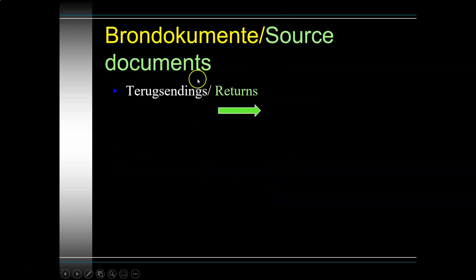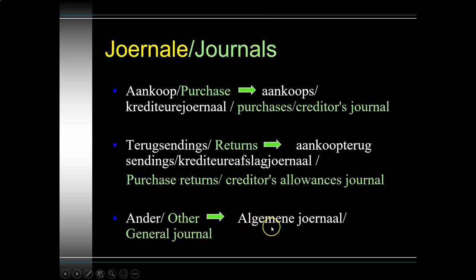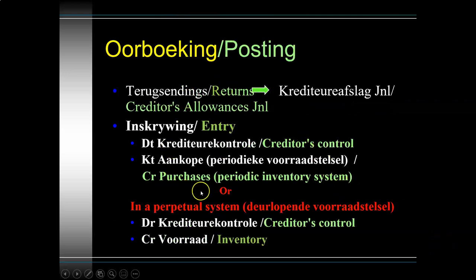We can also have a general journal entry that impacts our creditor's own account and the creditors control account - for example, if I didn't make payment in time and the creditor levied interest on my account, that interest portion would be posted via the general journal. If there was a return of merchandise to the supplier, I'm going to debit the creditors control account and credit purchases if it's a periodic inventory system, or debit the creditors control account and credit inventory if it's a perpetual inventory system.